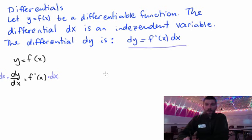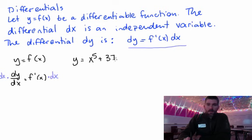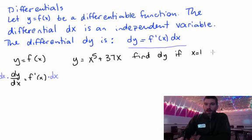It's actually kind of cool, and it's important because we use this a lot when we are using integrals. So let's just look at a couple things. y equals x to the fifth plus 37x. Find dy if x equals 1 and dx equals 0.01.